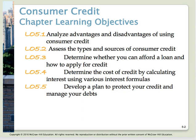Objective number five is to develop a plan to protect your credit rating and manage your debts. If billing errors occur on your account you can notify a creditor within 60 days, and if the dispute is not settled in your favor you can place your version of events in your credit file. If you have a complaint about credit, try to deal directly with the creditor first, but if that fails you can turn to the appropriate consumer credit law.